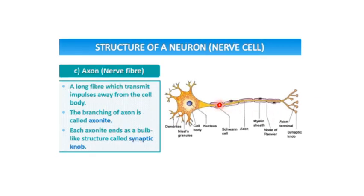Then we have the axon. The axon, as you can see, is very long because it has to transmit information away from the cell body. The branching of the axon is called axonite, and each axonite ends with a bulb-like structure which is called the synaptic knob, as you can see here.